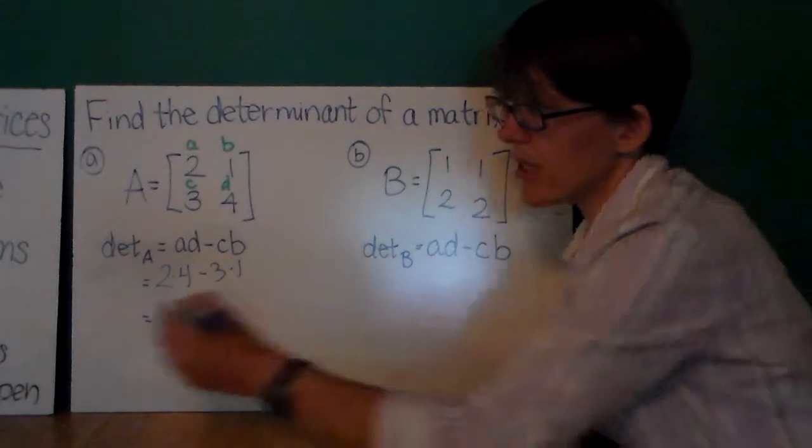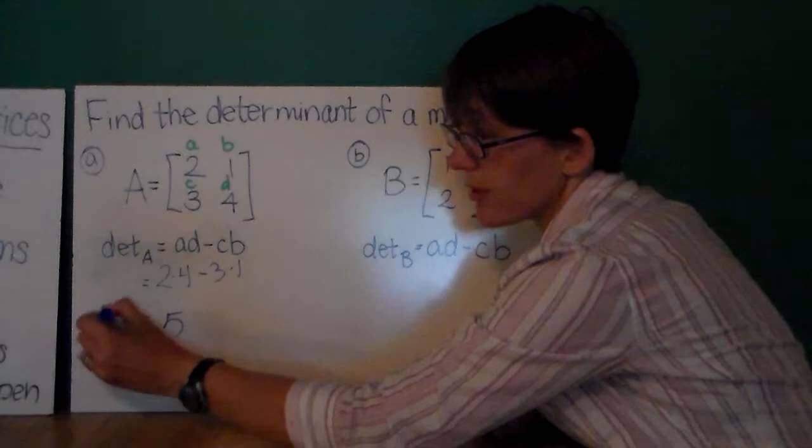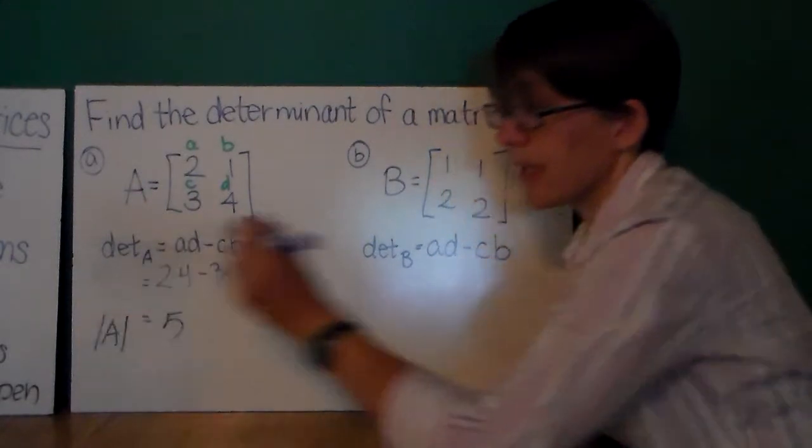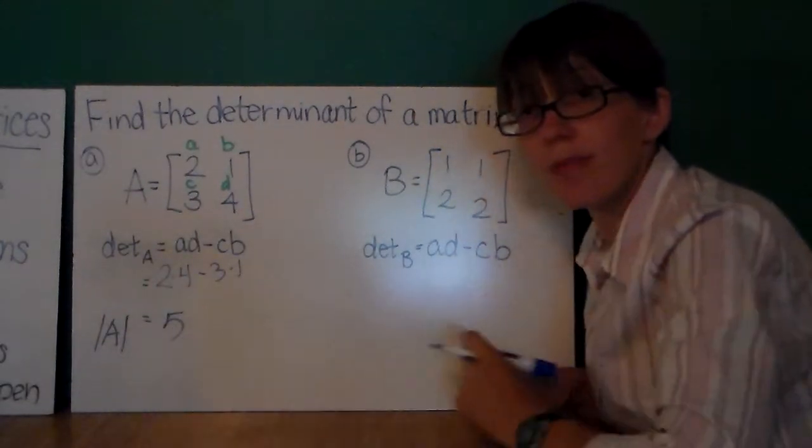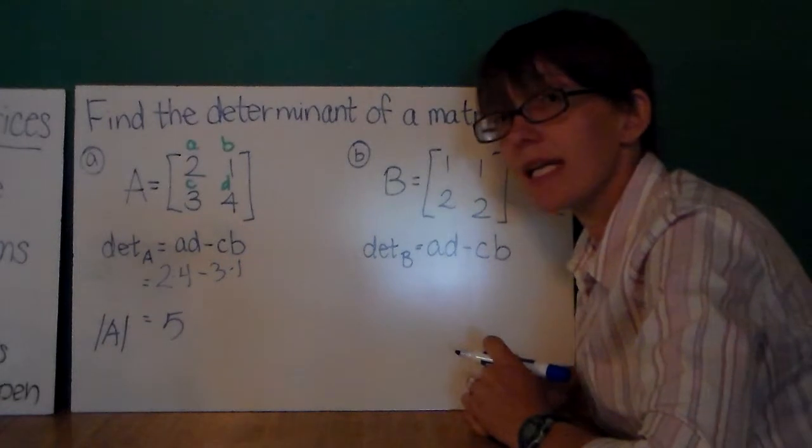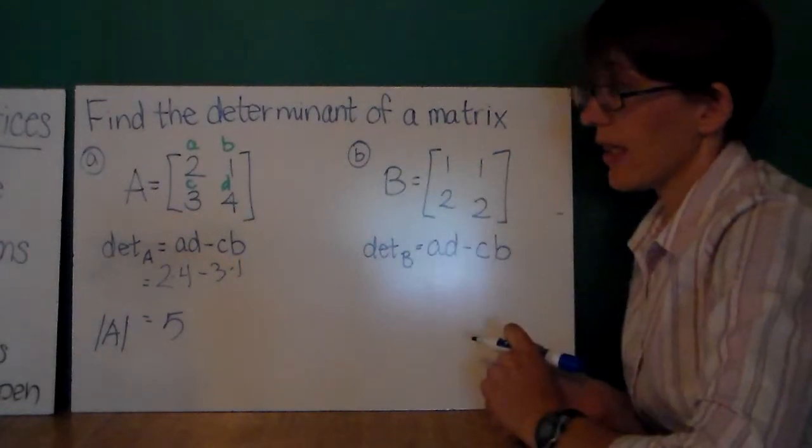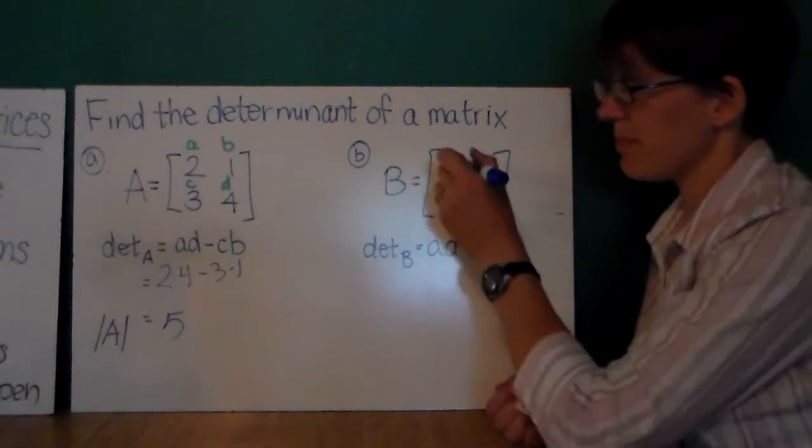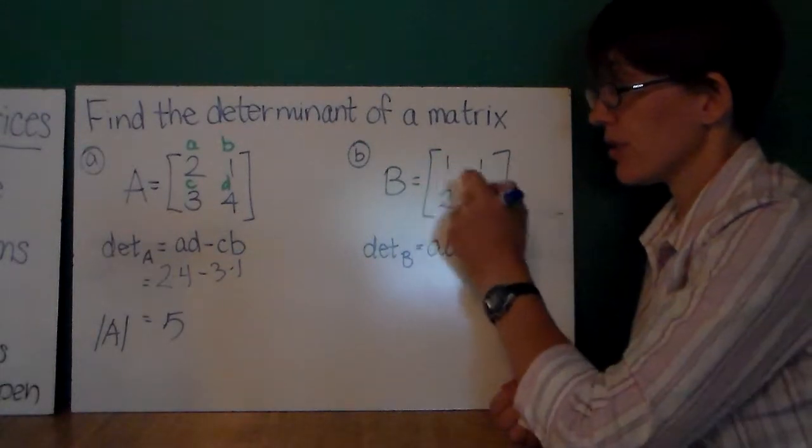Okay, so the determinant of A, which is also noted as A with the absolute value bars around it, is 5. Over here, I have another matrix B: 1, 1, 2, 2.